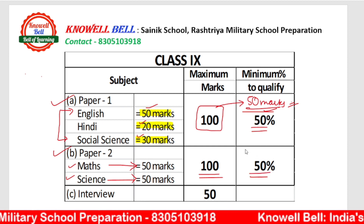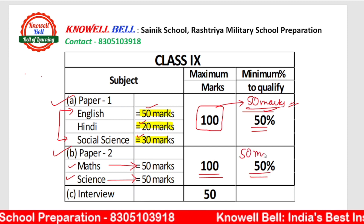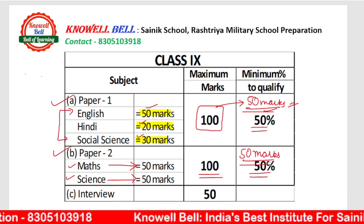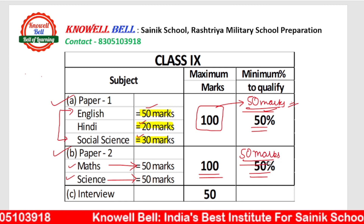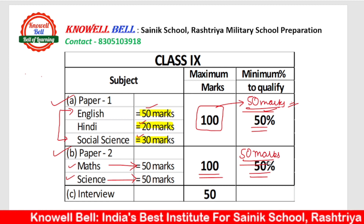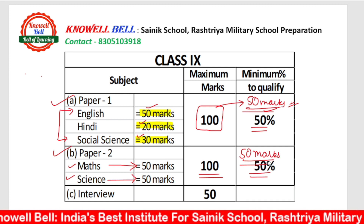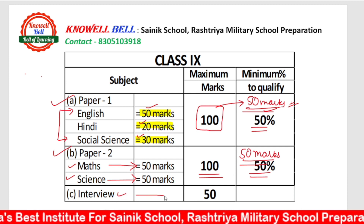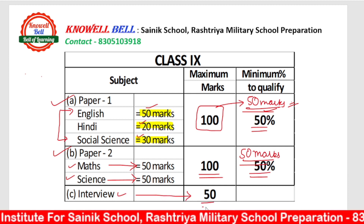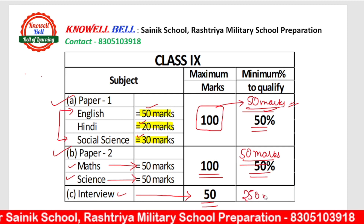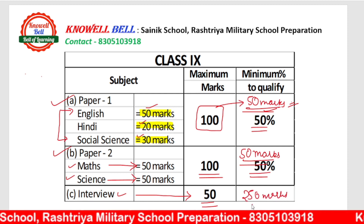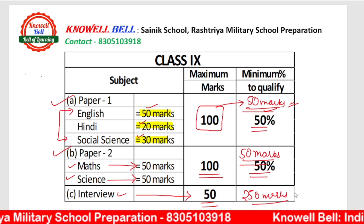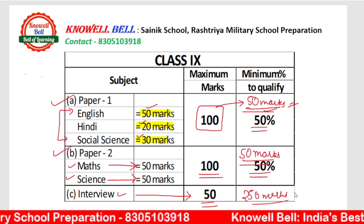The qualifying percentage is 50%, meaning you have to score at least 50 marks in both papers to qualify — 50 marks in Paper 1 and 50 marks in Paper 2. After that, there is an interview worth 50 marks. The total comes to 250 marks, and your merit list will be prepared on the basis of those 250 marks, which determines entry into Rashtriya Military School.